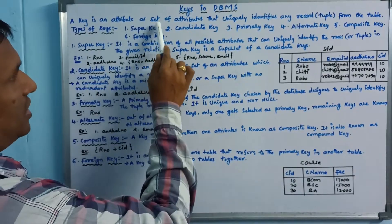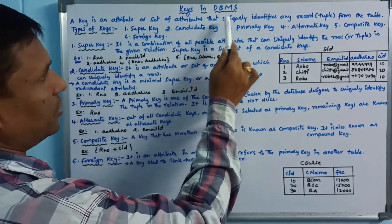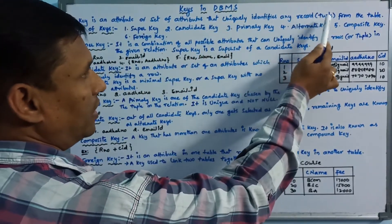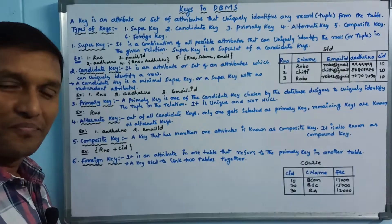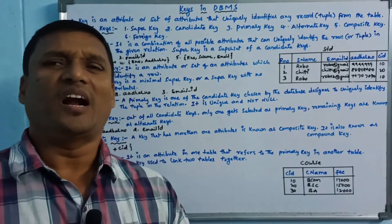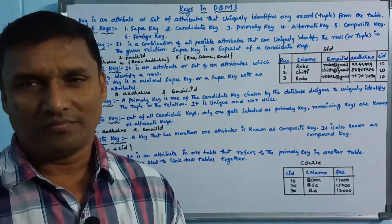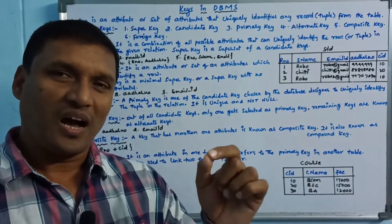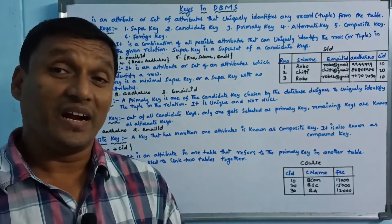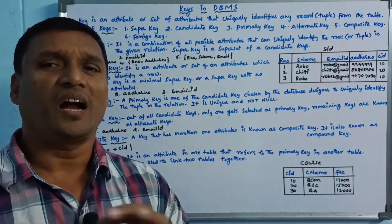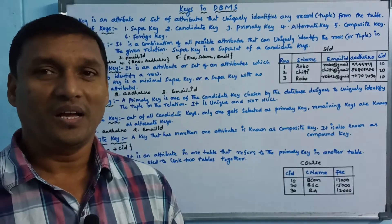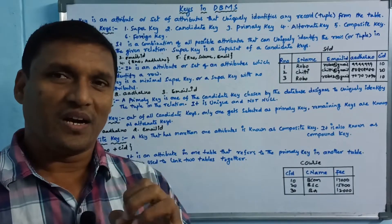A key is an attribute or a set of attributes that uniquely identifies any record from the table. The key is used to maintain unique records.